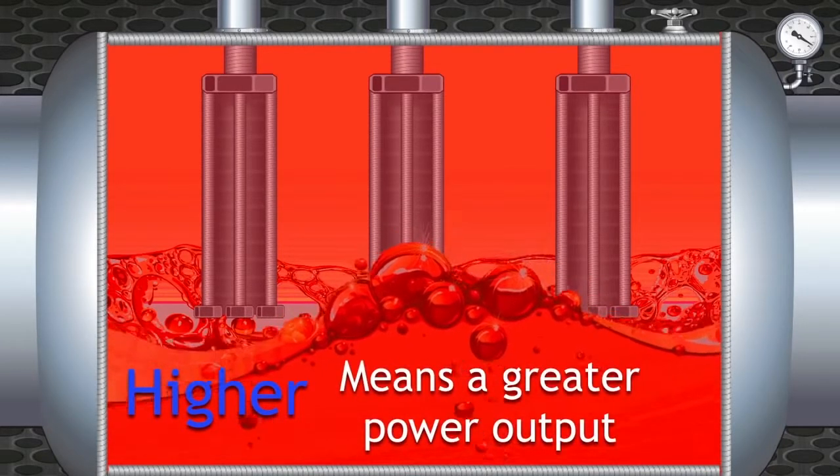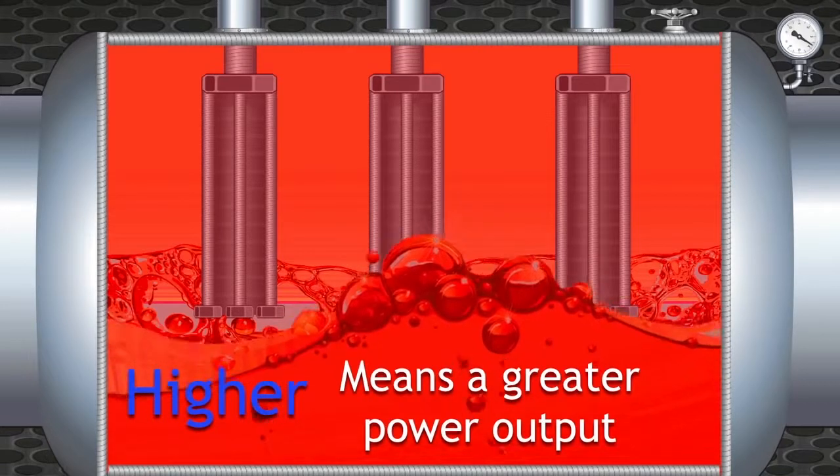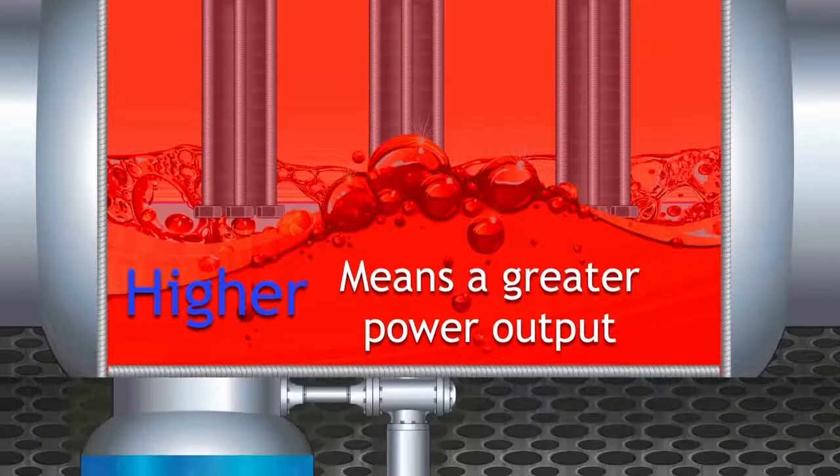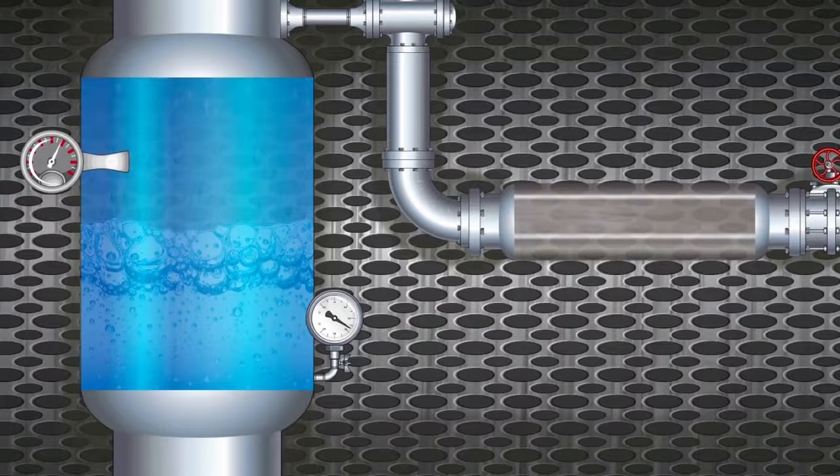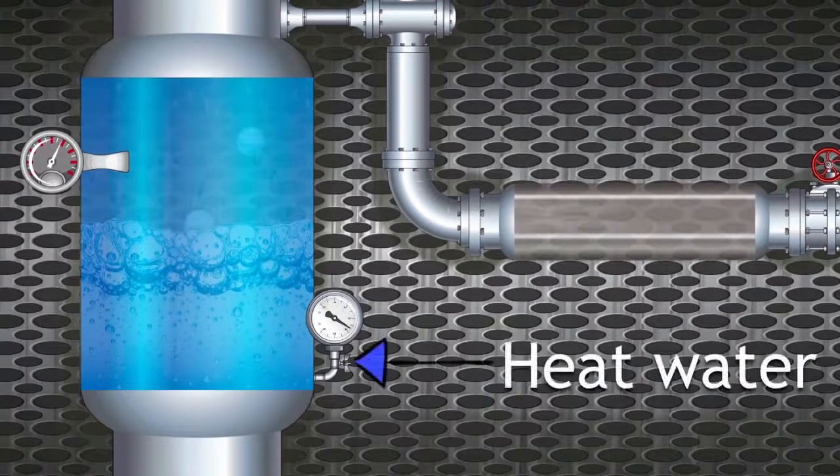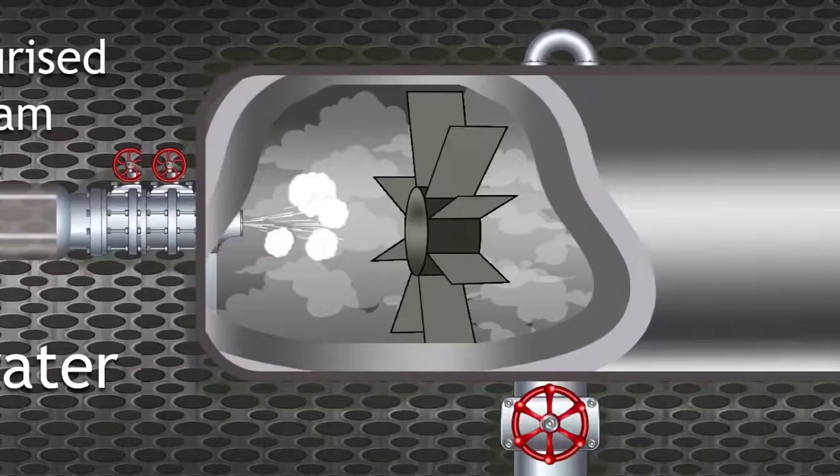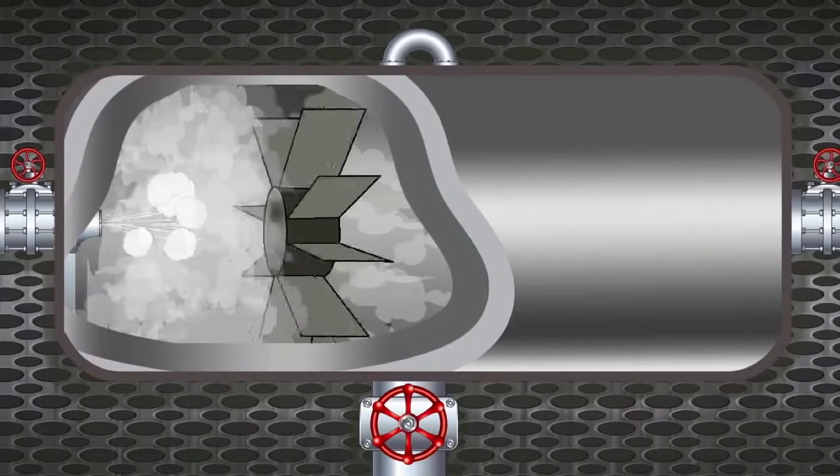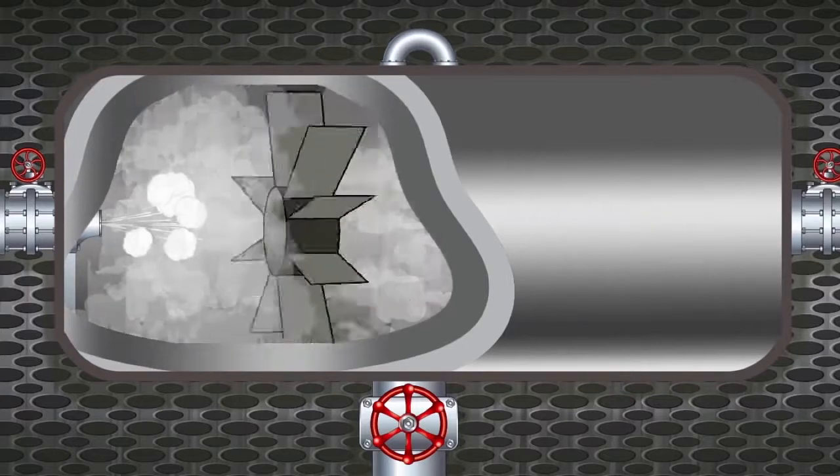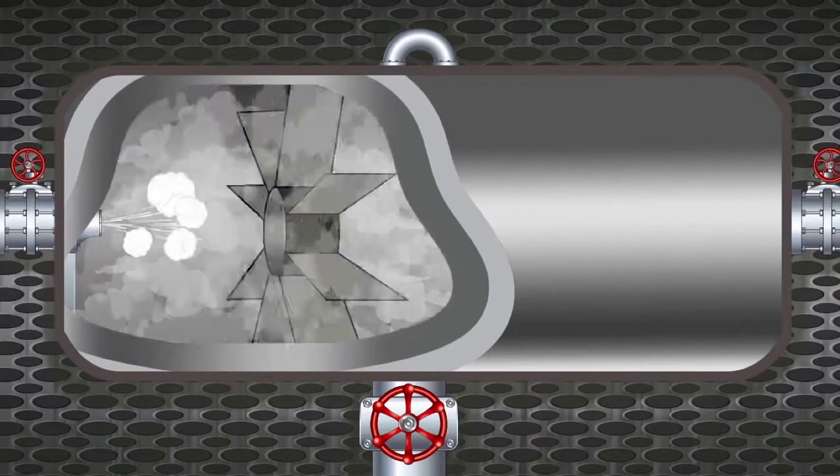With the aid of the control rods and other design features, nuclear reactions can be regulated, meaning there is a constant production of manageable heat energy, which then can be used to heat water into pressurized steam. This is then used to turn turbines connected to a generator, producing large amounts of electrical energy.